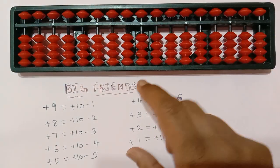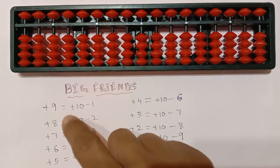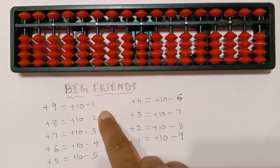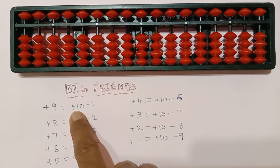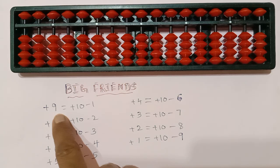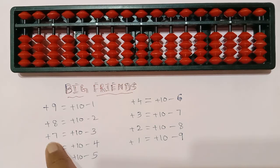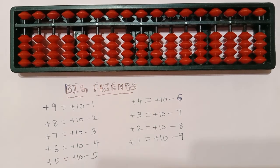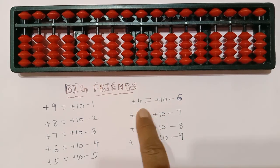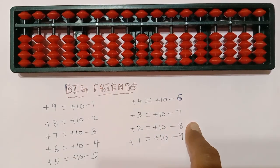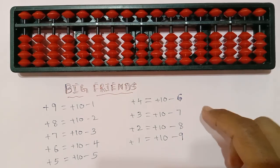Like this we have to practice. These are the big friends. If you know these techniques you can do addition sums easily. So these things you have to remember: to add 9 we have to add 10 minus 1, so plus 9 equals plus 10 minus 1. Plus 8 equals plus 10 minus 2. Plus 7 equals plus 10 minus 3. Plus 6 equals plus 10 minus 4. Plus 5 equals plus 10 minus 5. Like this it will continue. You have to remember all these — they are like formulas — so that we can add any numbers.